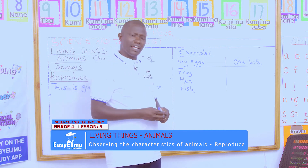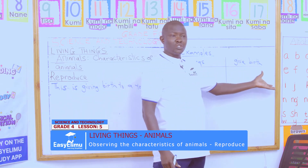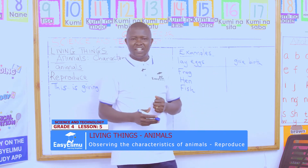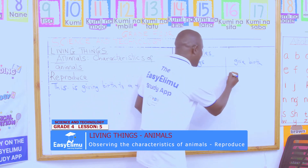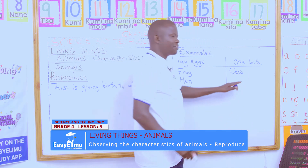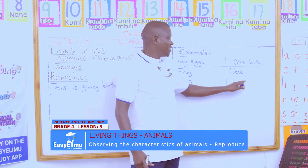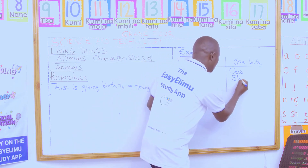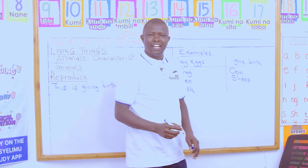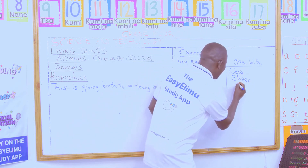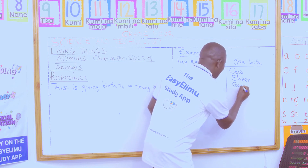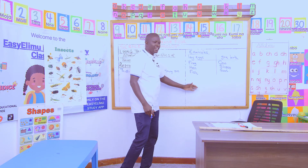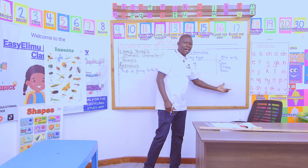But not all animals lay eggs — others give birth to young ones. Onyango has said a cow. A cow gives birth to a young one. Wangari has said sheep — sheep gives birth to a young one. And the teacher gives us the last one: a goat will give birth to a young one. So these are examples of animals which reproduce by giving birth to young ones.